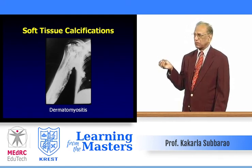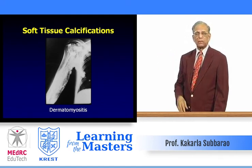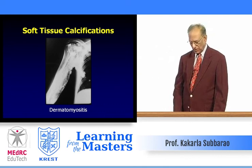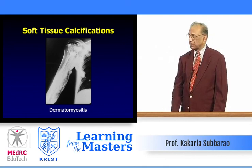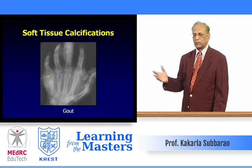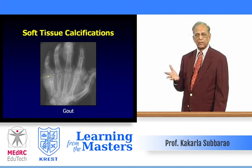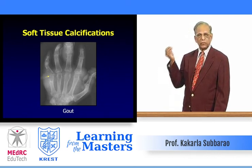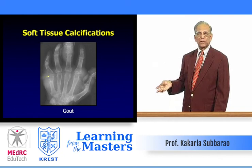In dermatomyositis, another collagen vascular disorder, there is calcification of the muscles. In gout, calcification is due to calcific tophi — monosodium urate crystals get deposited, calcify, and produce tophi.